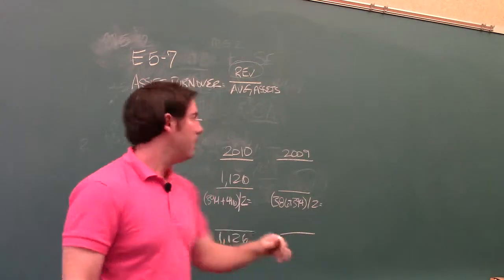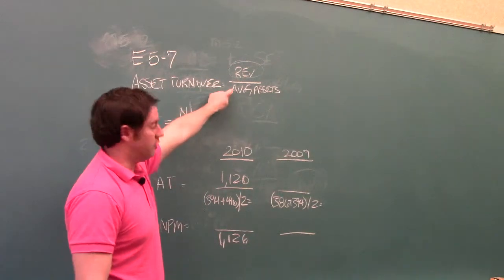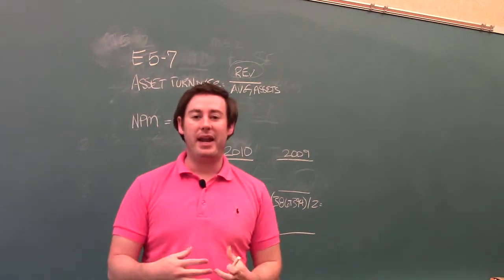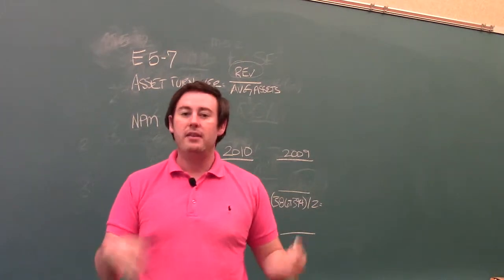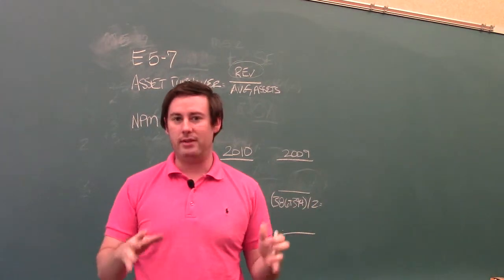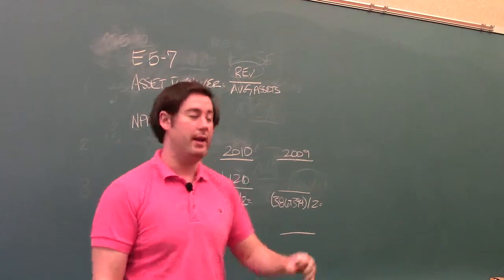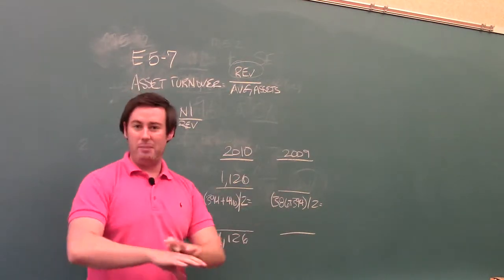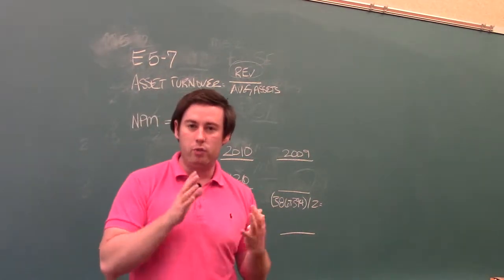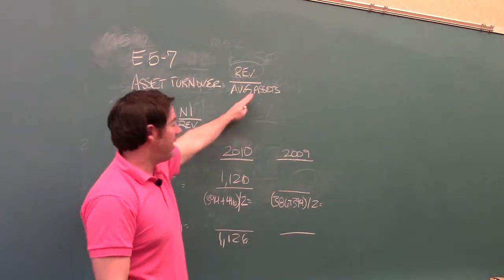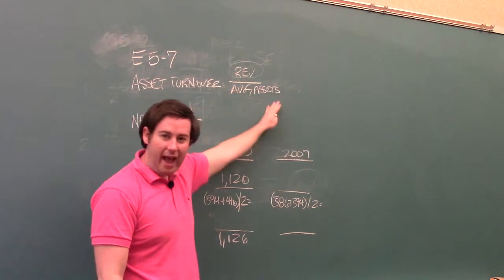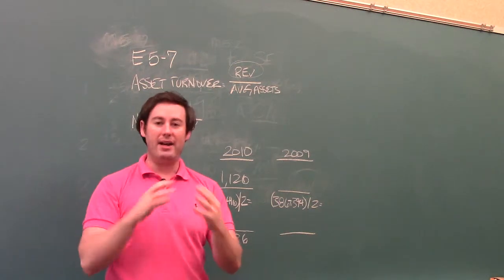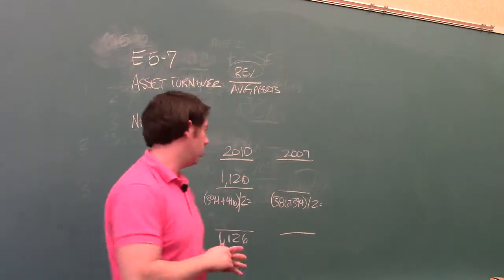So average assets is used so that we get the denominator to also be through a period. The balance sheet is a snapshot, a point in time. The income statement is through a period. Since the numerator is through a period, we need the denominator to be through a period. If we just use one date, if we just use one point in time, this would only be as of a certain date. So we use average so that both items agree, both of their characteristics agree here.